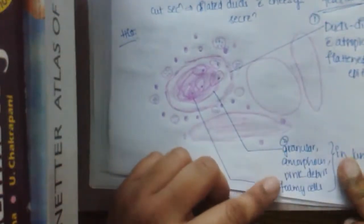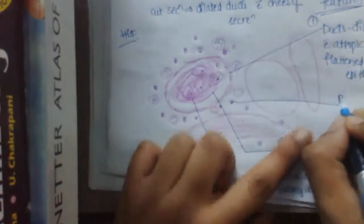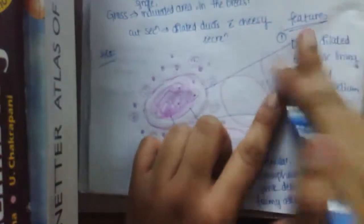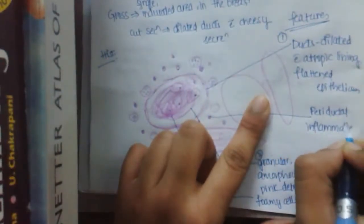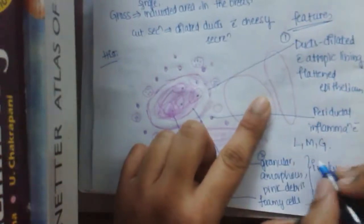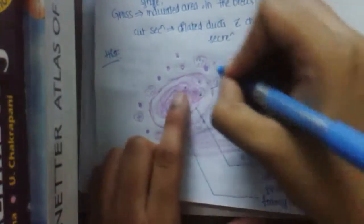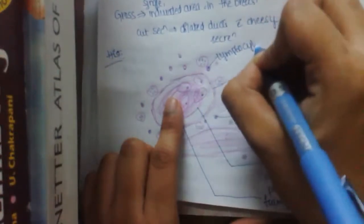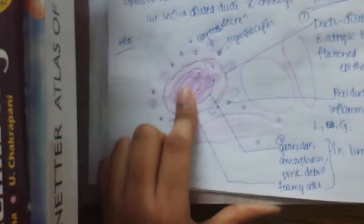this is the second point: presence of granular, amorphous pink debris and foamy cells in the lumen. And there is periductal inflammation with lymphocytes, macrophages and giant cells. L is lymphocytes and G is giant cells. So these are lymphocytes and these are giant cells.